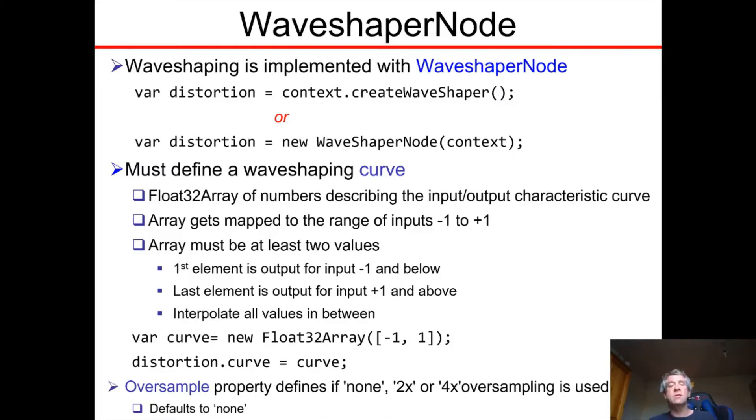The elements of the array get mapped, so the indexes get mapped to the range of inputs from -1 to +1. The values of that array at those indexes are simply the y values of the input-output characteristic curve.